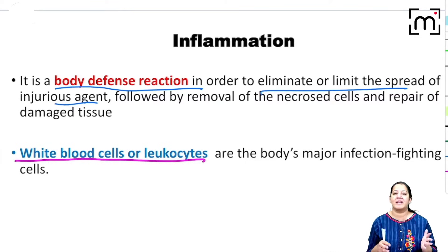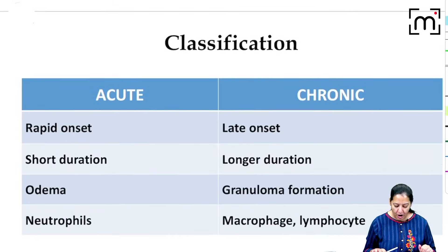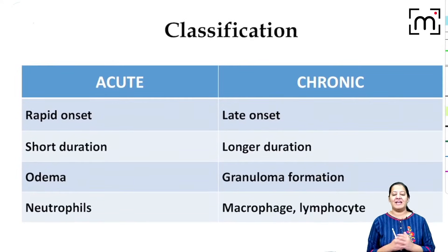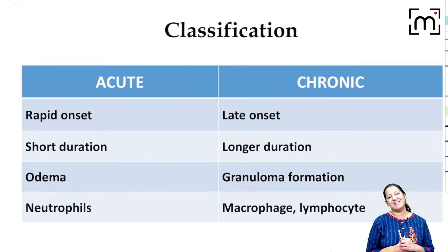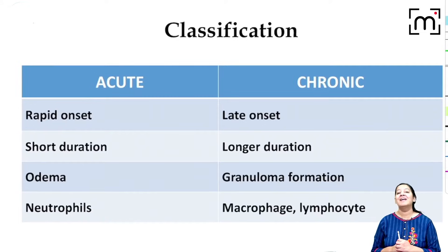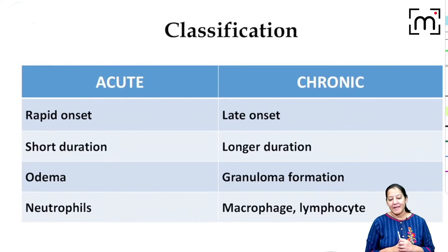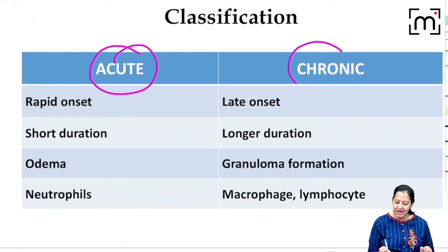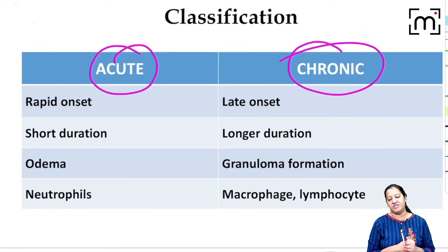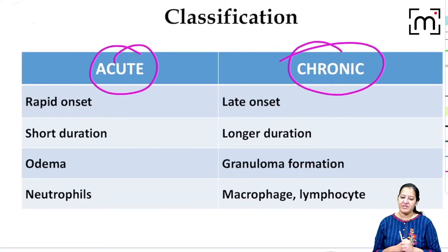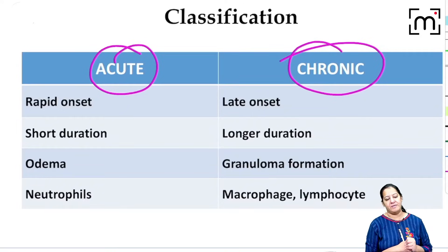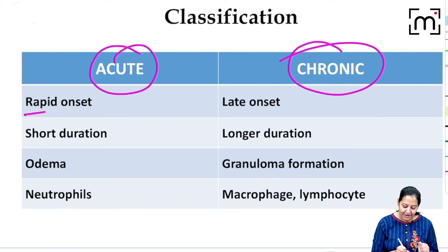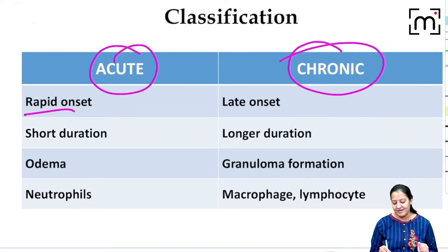Let me classify inflammation before starting the acute inflammation vascular events. Inflammation is of two types: acute inflammation and chronic inflammation. Acute inflammation is rapid in onset, while chronic inflammation is late in onset.